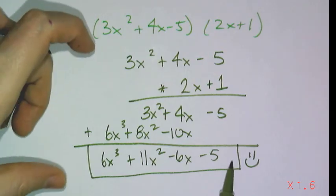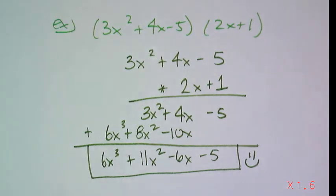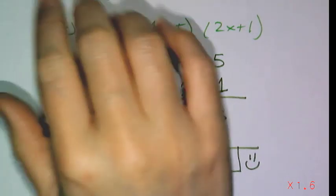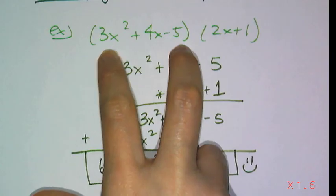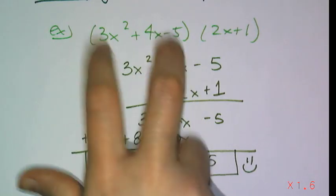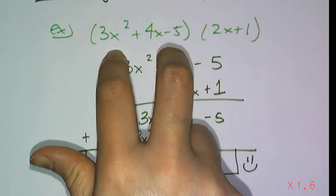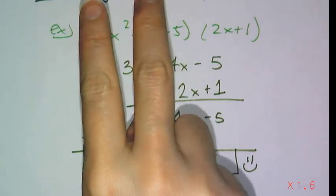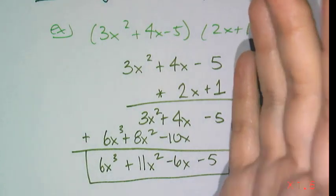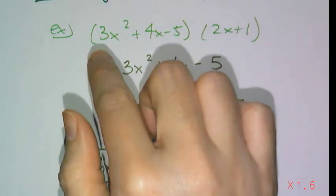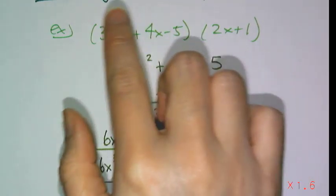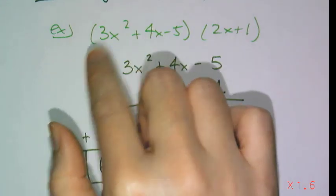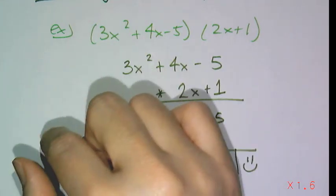So I have 6x cubed plus 11x squared minus 6x minus 5. And if you want to check, you can just type those both into the calculator and make sure your answer works. Now polynomials actually just represent numbers. So this represents some number. And so we can add it to other numbers. We can subtract it from other numbers. We can multiply it. We can also divide polynomials. And we can factor them, like we can factor 6 into 2 times 3. So those are the next operations we're going to work with. We're going to work with factoring next. And then we're going to end up, after that, dividing polynomials, just like you divide numbers.